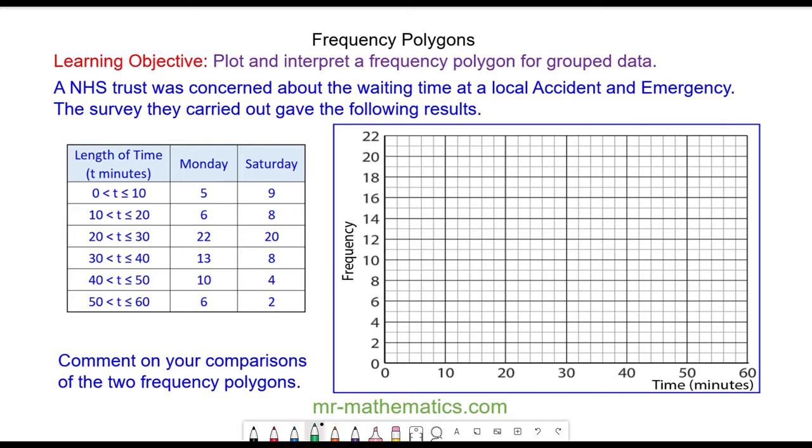To plot the points of a frequency polygon, we need to use the length of time which is between 0 and 10 minutes. But because a polygon has a vertex or corner, we need a single point between 0 and 10, which is halfway at 5. So we're going to plot this frequency of 5 on Monday at 5 minutes, which is halfway between 0 and 10.